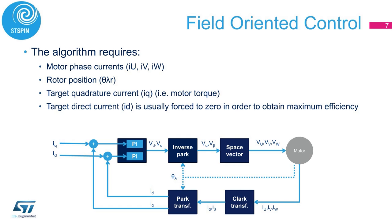The target quadrature current value is usually imposed by a second control loop according to the specific application. The most common control type is speed control, where the torque is adjusted in order to obtain the desired rotation speed. The last parameter is the direct current, but its value is usually imposed to zero in order to obtain the maximum efficiency. Negative values of direct current can be used to reach very high speed thanks to field weakening. However, this technique will not be explored during this presentation.